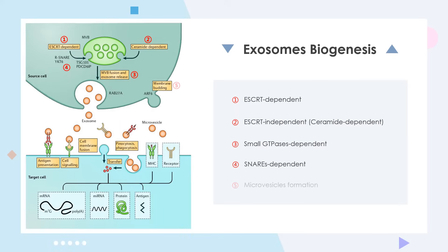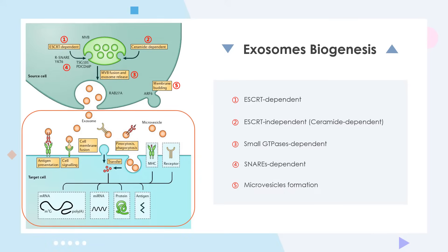Microvesicles represent a relatively heterogeneous population of vesicles formed by the outward germination and fission of cell membranes, which can be controlled by membrane lipid microdomains and regulatory proteins such as ADP ribosylation factor VI. Microvesicles get involved in antigen presentation and the transfer of MHC molecules and antigens, thereby participating in immune regulation.